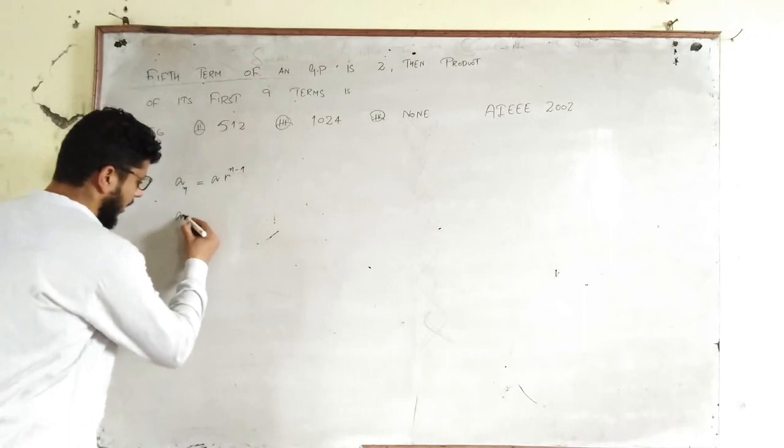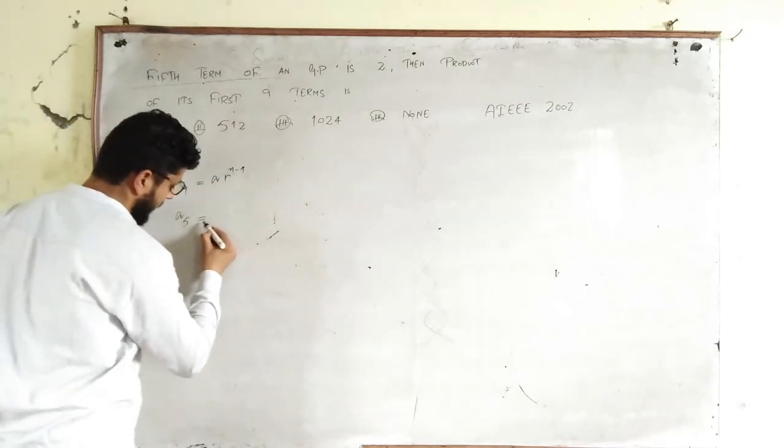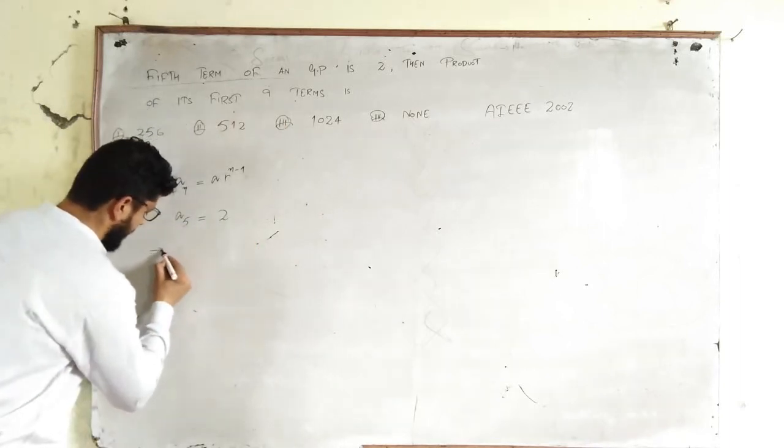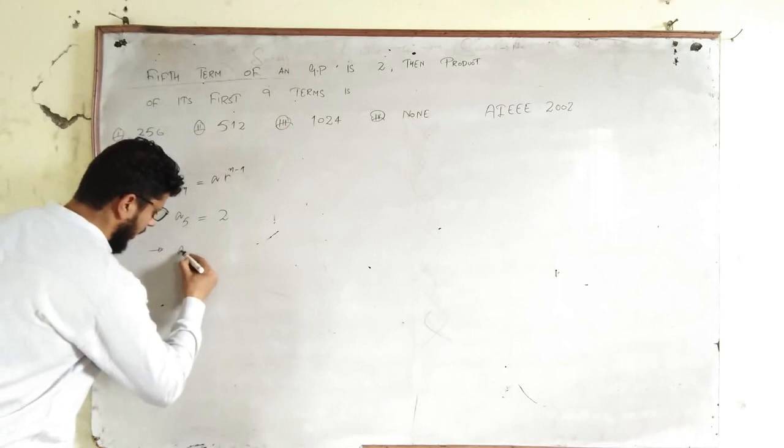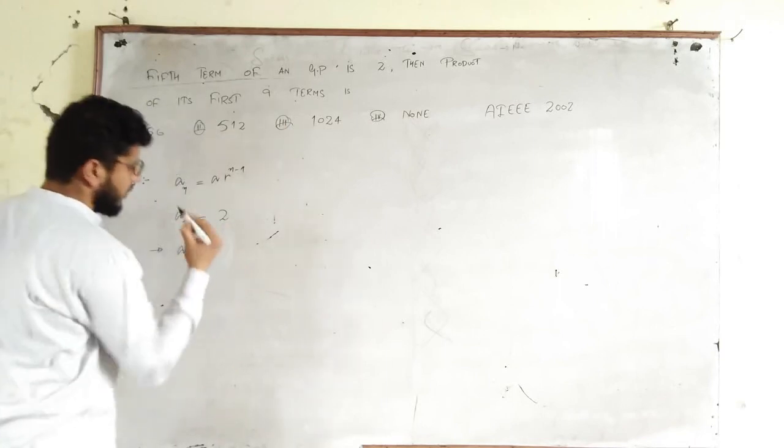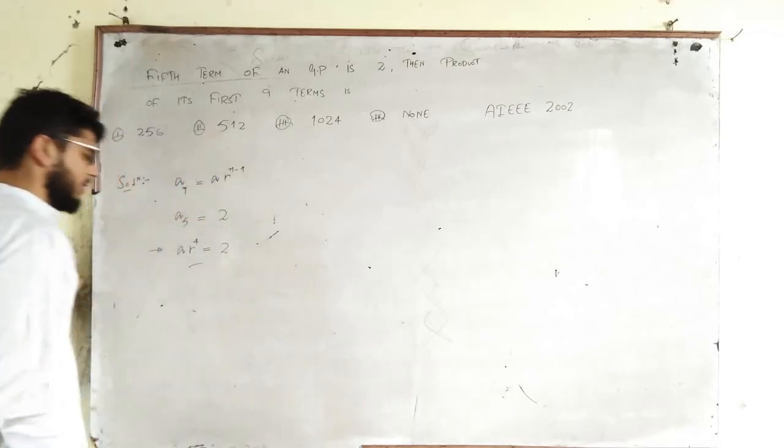Now, given is A5, the fifth term, equals 2. Which implies AR^4 = 2, because when you substitute N=5, you get AR^4 = 2. So this is done.